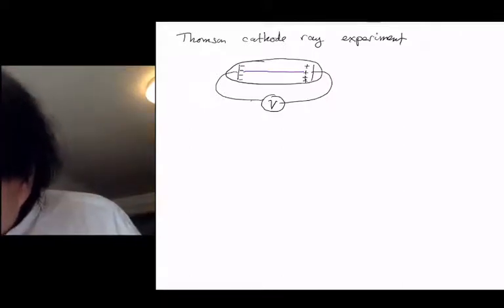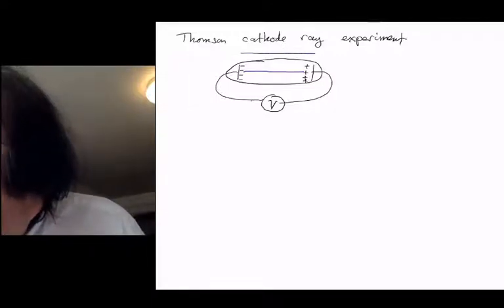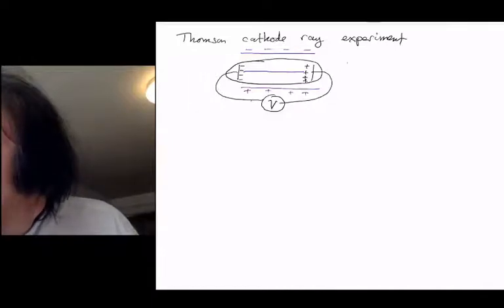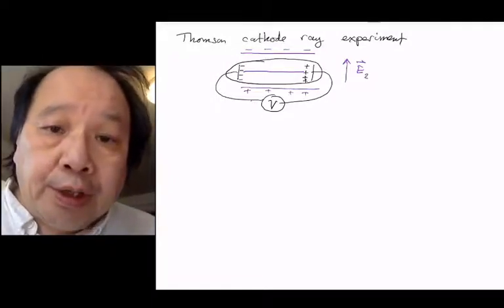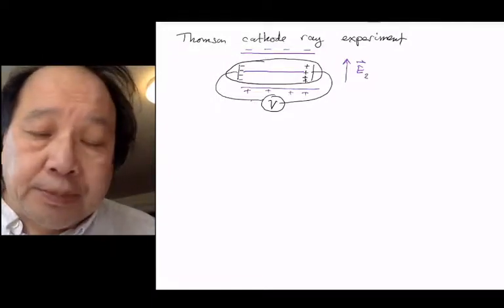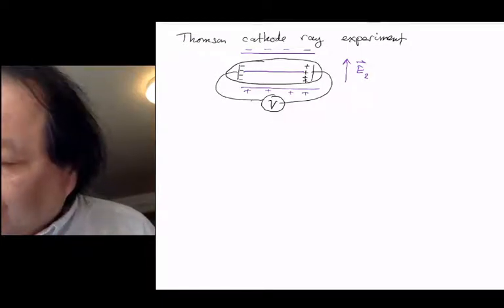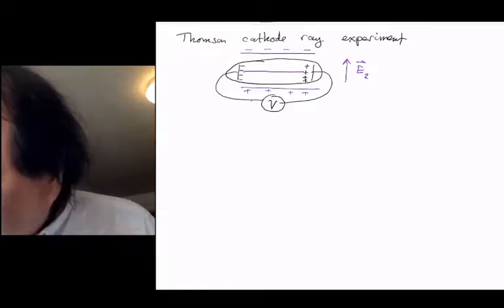So what Thomson then did was he put up a second weaker electric pair of plates outside the tube, and that creates an electric field, a second electric field pointing upwards from the plus plate to the minus plate. When he did that, he found that the beam changed direction.